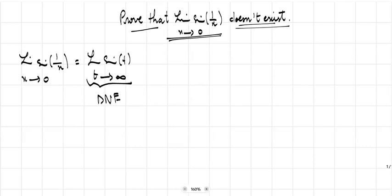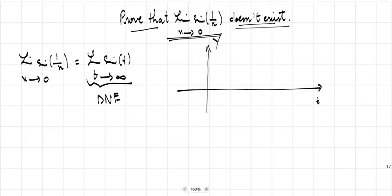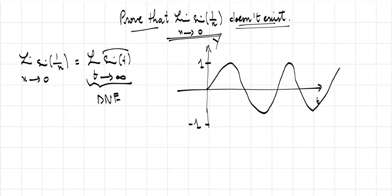We know that this limit does not exist — it is DNA (does not exist). The reason behind the non-existence is that we can draw the curve of sine t: with t on the horizontal axis and y on the vertical axis, the function sine t oscillates between 1 and minus 1, and it keeps going like this indefinitely.